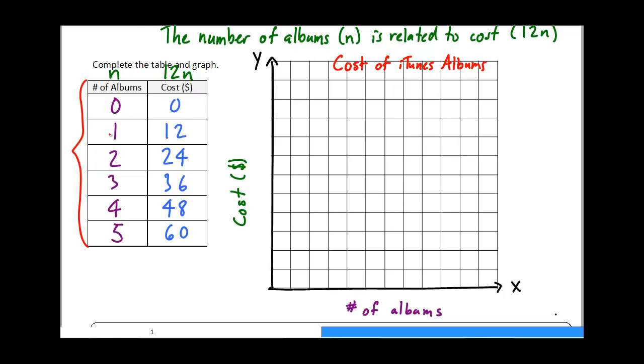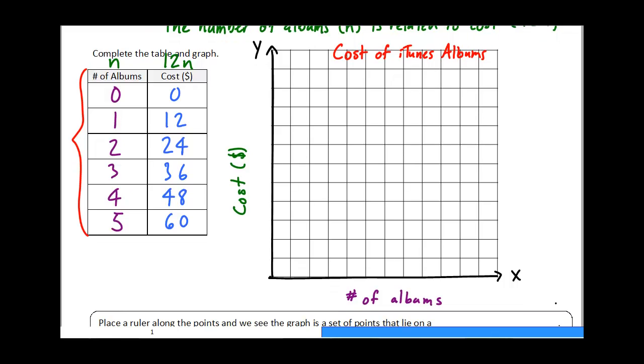And then before we can start putting these points on our graph, we need to choose a scale. Now what that means is, if you look across the bottom, if we do a quick count here, we have 1, 2, 3, 4, 5, 6, 7, 8, 9, 10, 11, 12 boxes that we can work with. And if you look at the number of albums here, we went from zero all the way up to five. So if I have 12 boxes, I don't want to squish my numbers into one small area. So what I'm going to do is make every second box one album. So this is one album, and then I'm going to skip two boxes and this is two, and then this is three, and four, and five.